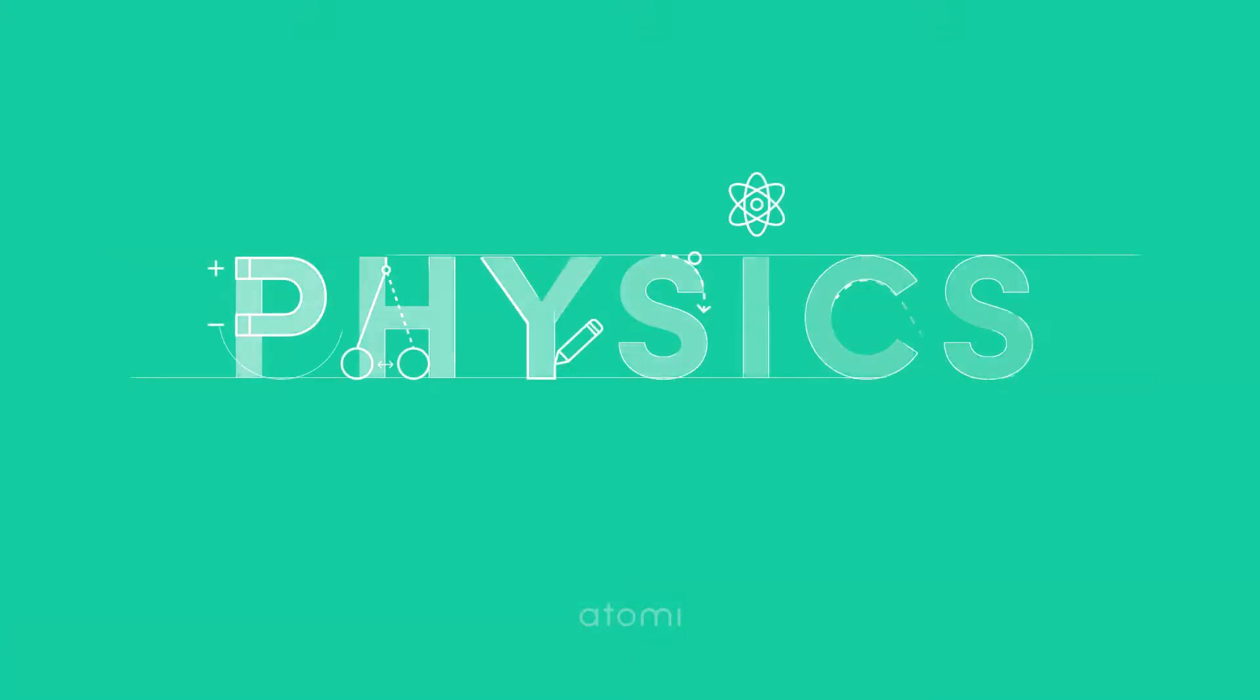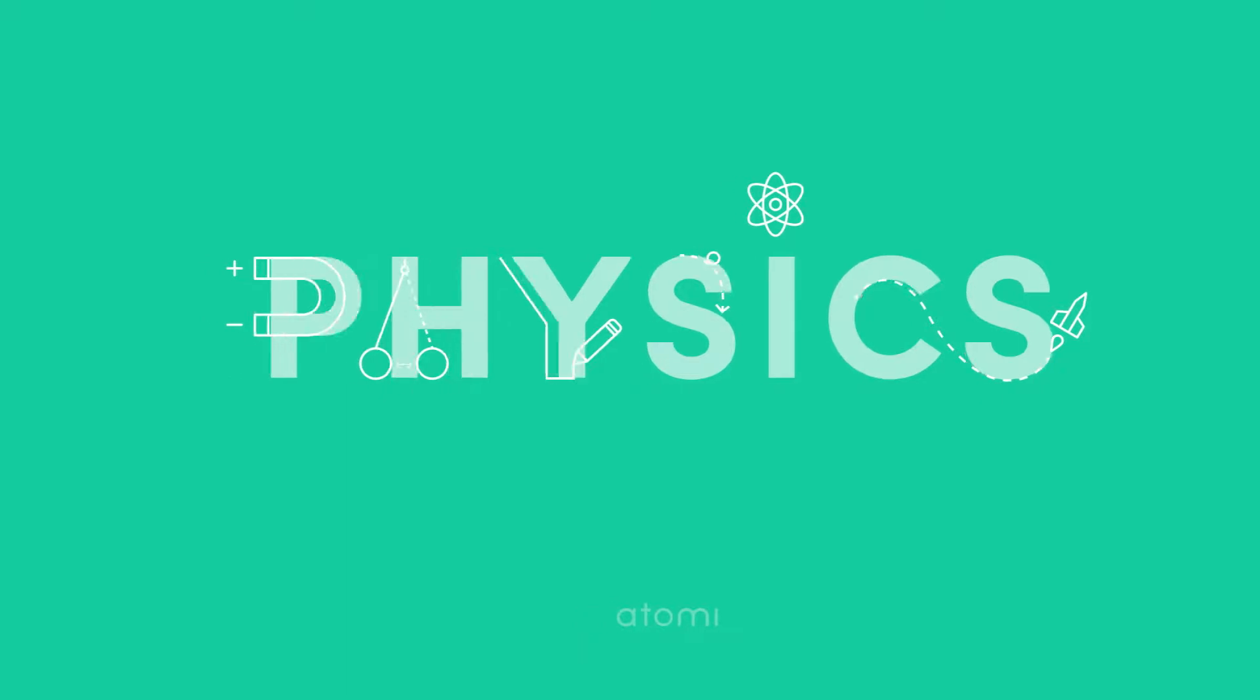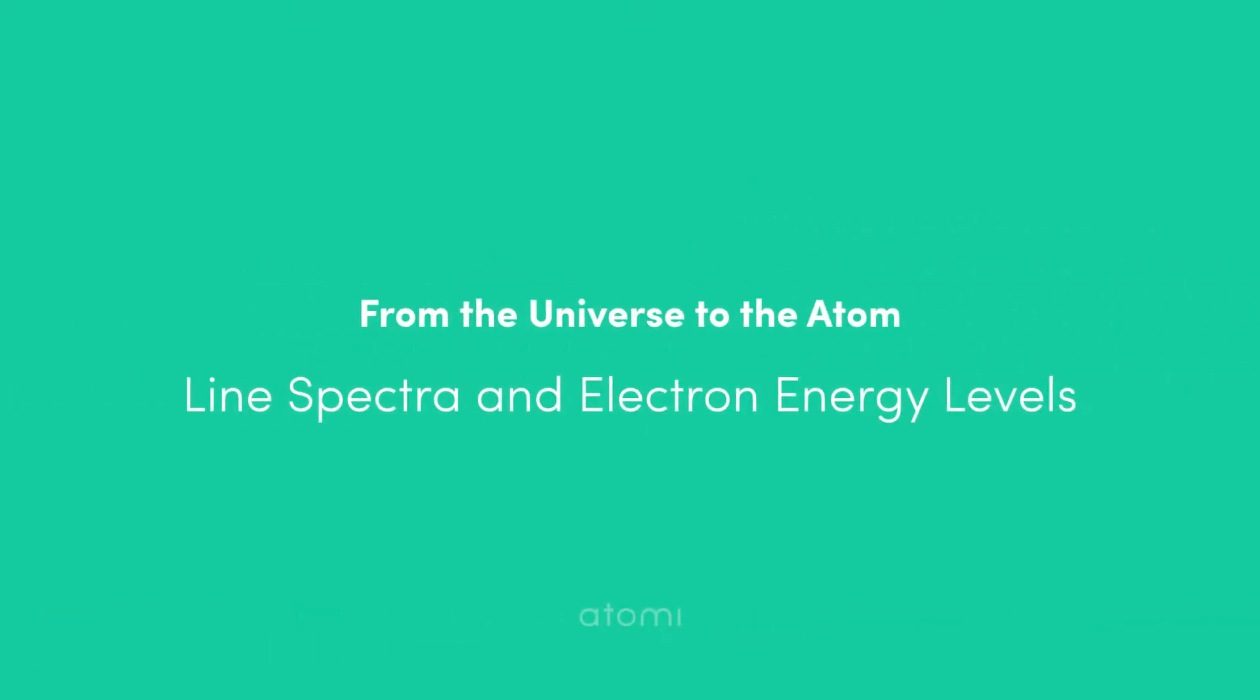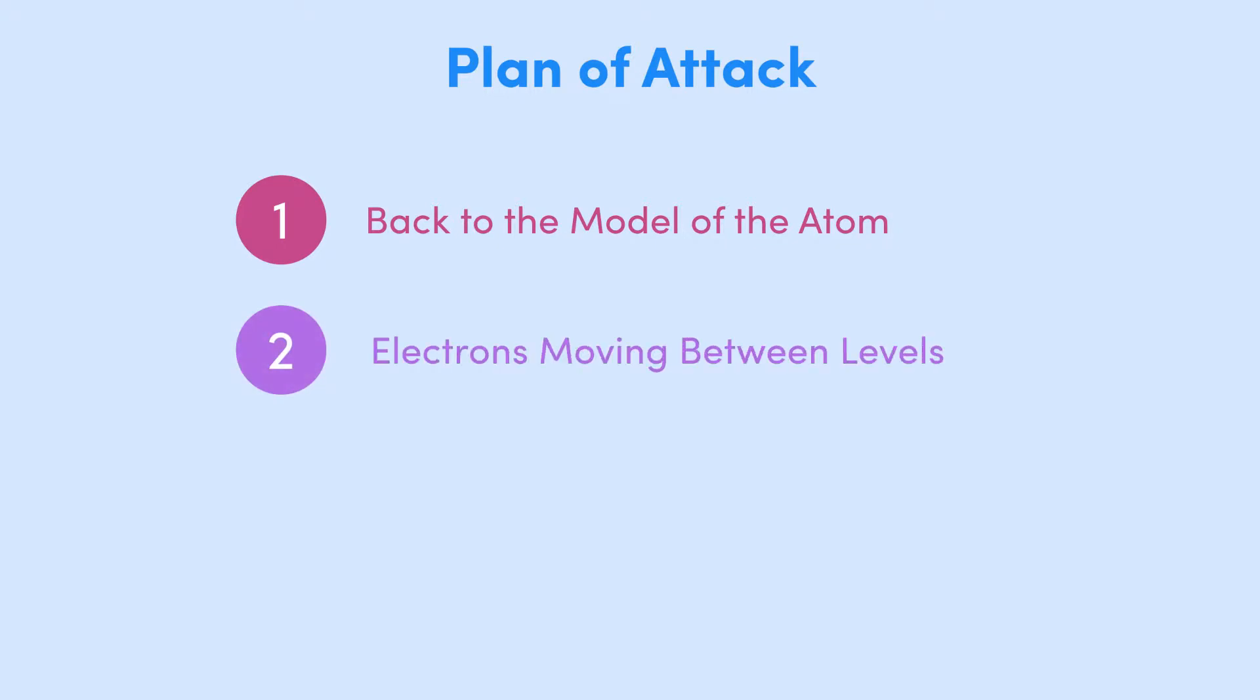Hey guys, welcome back. In this video, we're going to explore a couple of incredibly important topics in your physics course: line spectra and energy levels. We'll start by going back to the model of the atom and looking at the orbits of the electrons. Then, we'll see what can happen when electrons move to different orbits. Finally, we'll finish up with the two types of line spectra. So let's get started.